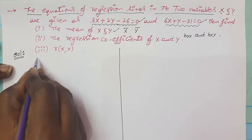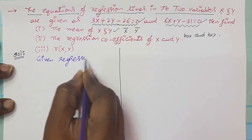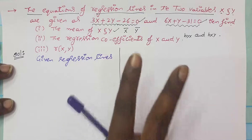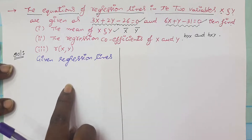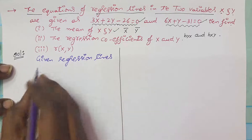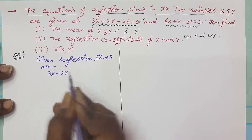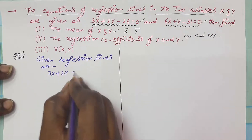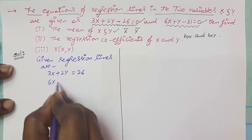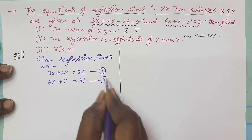First of all, write the given regression lines. We know there are two types: regression line of y on x, and regression line of x on y. So equation 1 is 3x + 2y = 26, and equation 2 is 6x + y = 31.